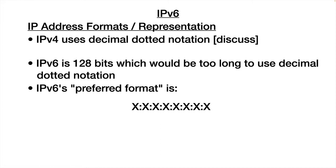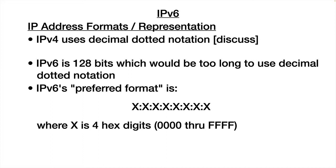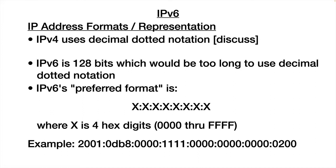What we have instead is the IP version 6 preferred format. The preferred format is 8 values separated by colons, and each of those values is 4 hexadecimal digits — so each would be somewhere between 0000 and FFFF. We've gone from 32 decimal numbers to 32 hex digits, which is a little better. A preferred format IP version 6 address still looks pretty long.